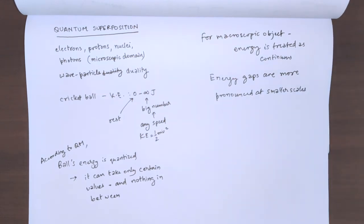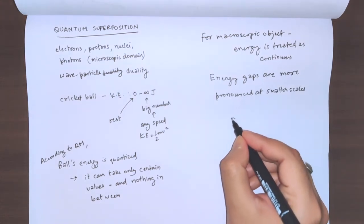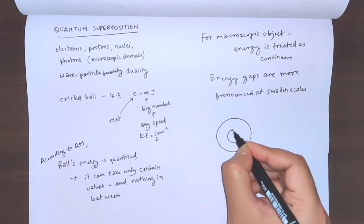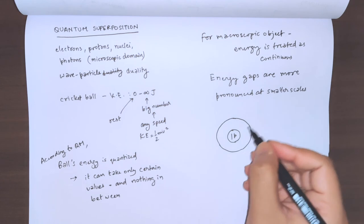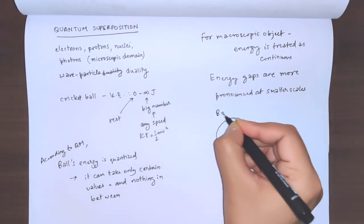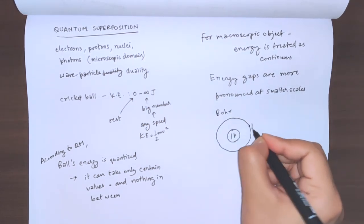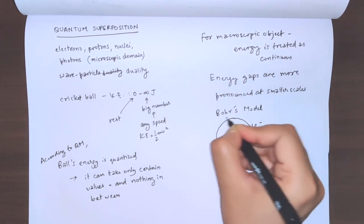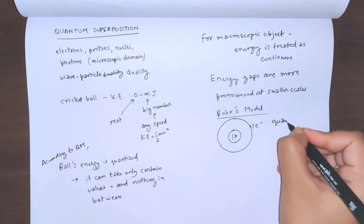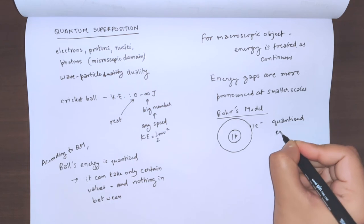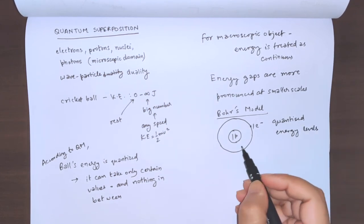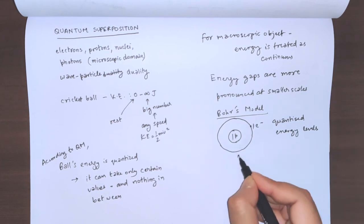The Bohr model - we have studied in our earlier classes that Bohr modeled the hydrogen atom using quantization of energy levels for a proton and one electron bound state. He quantized energy levels for an electron-proton bound state. This is a bound state.